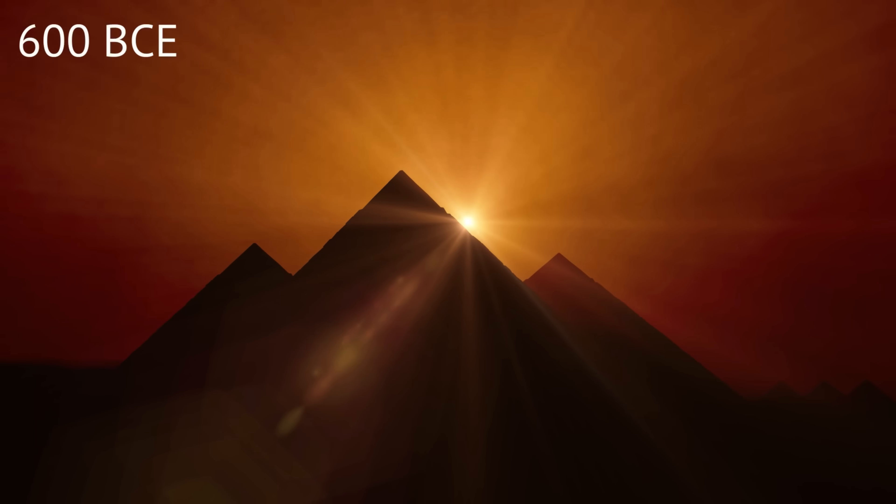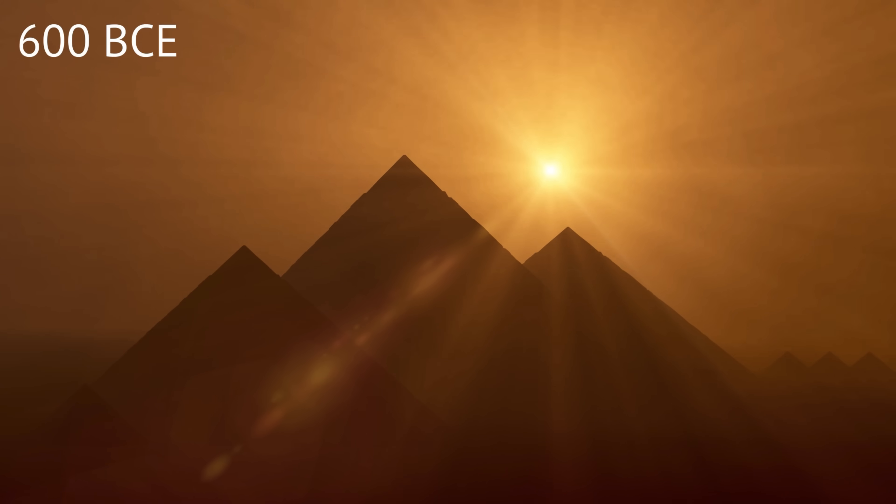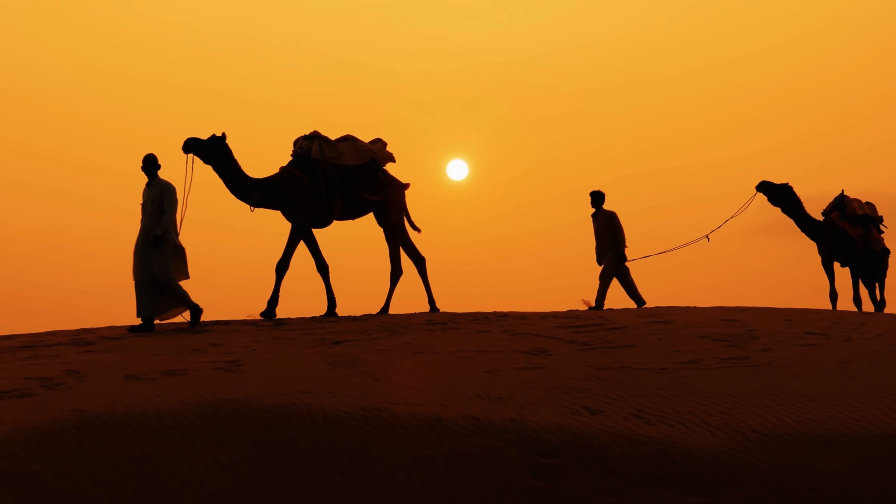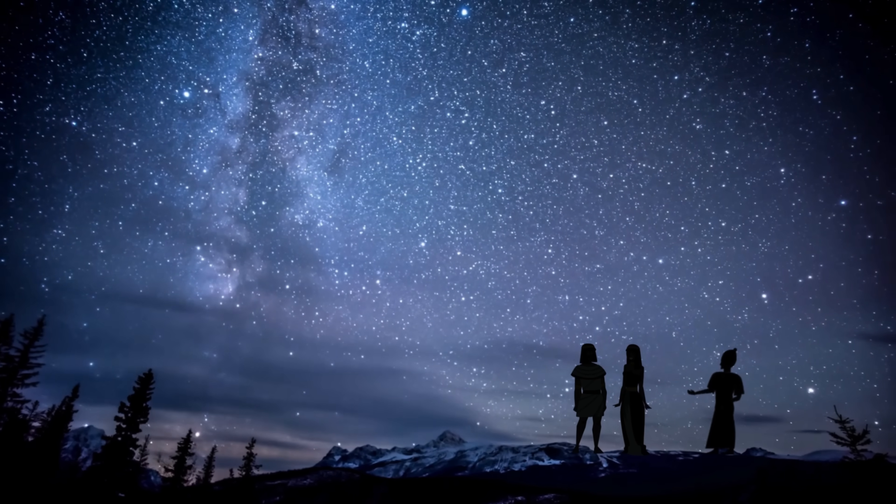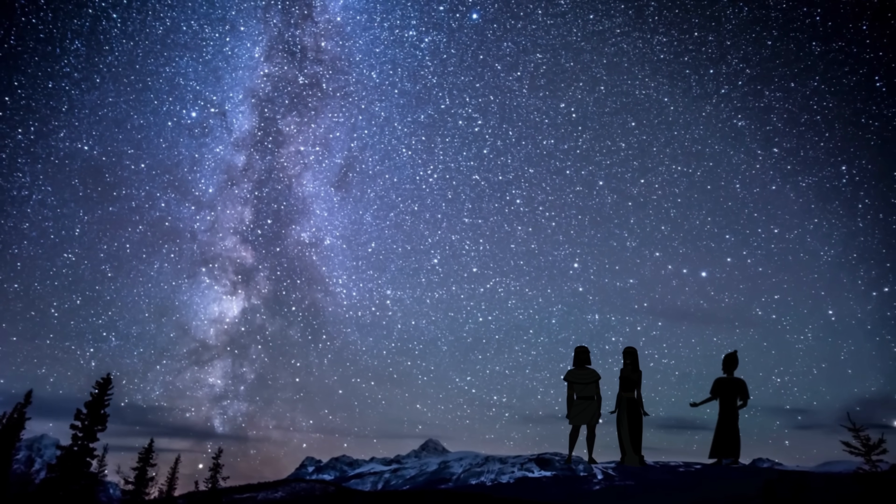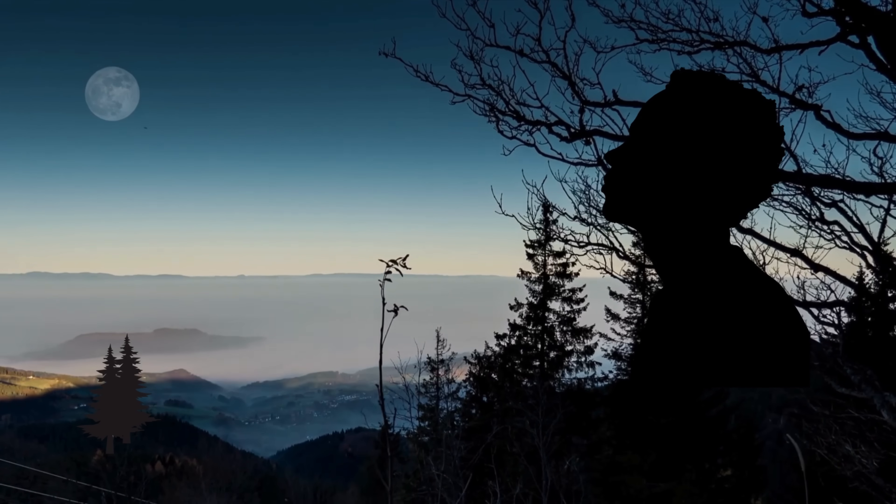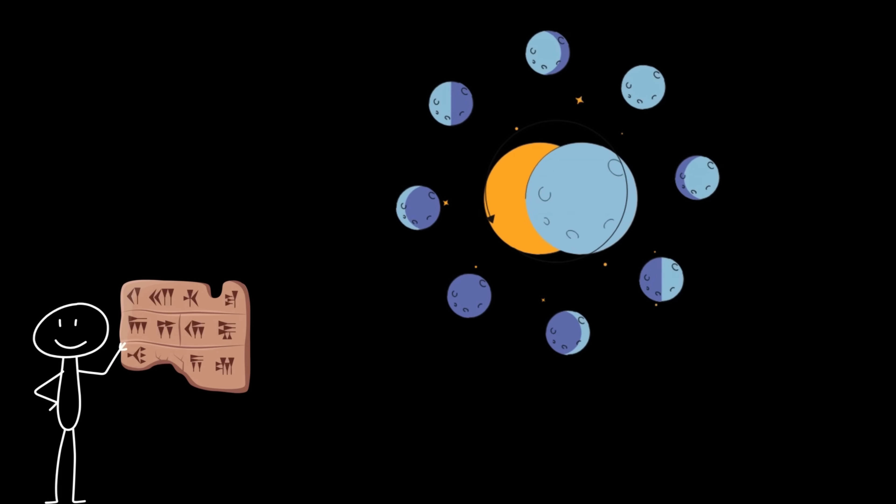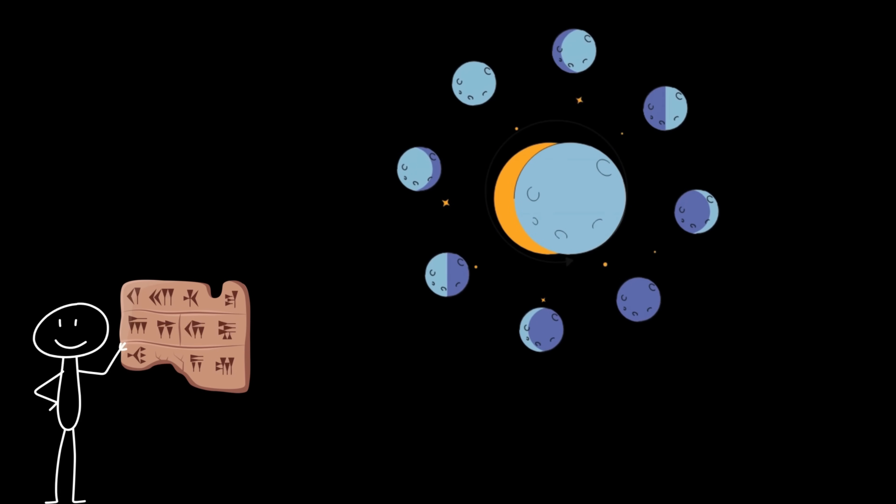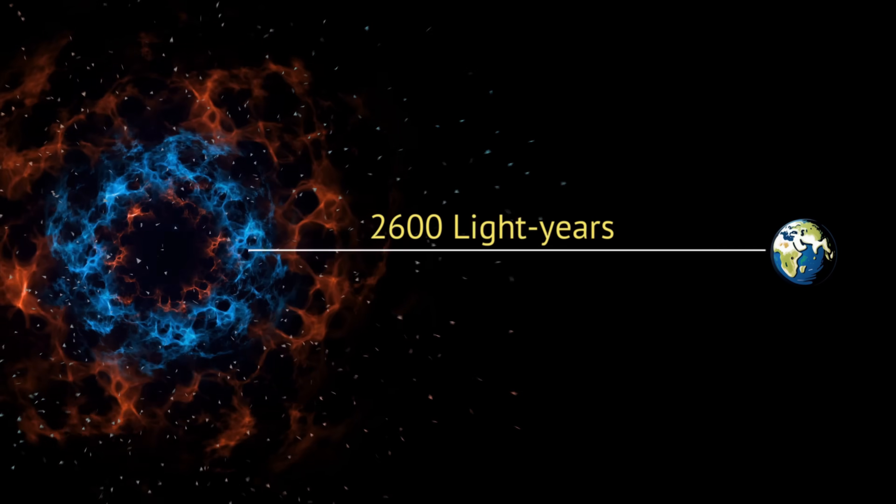By the year 600 BCE, the pyramids of Giza had already stood for over 2,000 years, silently witnessing the rise of human civilization, growing in rapid and diverse ways. It was during this time that our fascination with the stars began to turn into a study. The Babylonians recorded the movements of celestial bodies like the sun, moon, and planets and developed a calendar that could predict lunar and solar eclipses. And it was during this time that a star, 2,600 light years away, erupted in a dramatic explosion.